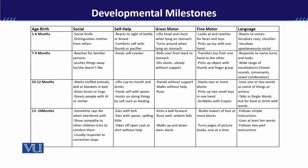اسی طرح جب ہم fine motor skills کی بات کرتے ہیں تو اس کا مطلب یہ ہوتا ہے کہ when the child is able to use the smaller muscles of the body — like ہاتھ کے muscles، grip کرنا، pencil کو grip کرنا، ball کو catch کرنا — these are all things classified in fine motor skills. تو اگر 1 سے 6 مہینے کے درمیان child is able to look at and reach for faces and toys, and picks up toys with one hand، اور اگر کوئی بچہ یہ task appropriately perform نہیں کر پا رہا، تو that means the child has a developmental delay۔